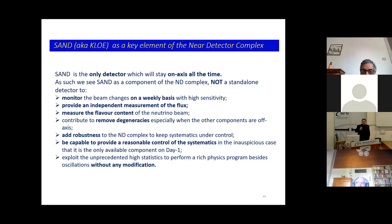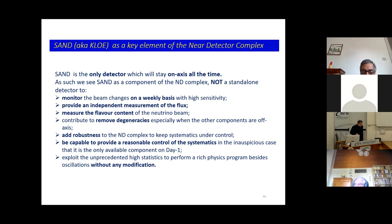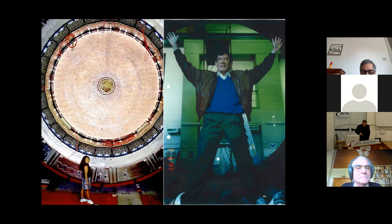We also want to independently measure the flux, the flavor composition of the beam — which is almost pure nu-mu but has small percentages of anti-nu-mu, anti-nu-e, and nu-e — and we want to measure as much as possible all the degeneracies that come from the convolution of cross-section, flux, efficiency, and acceptance. And in case of desperation, the on-axis detector should be good enough for at least a mass ordering measurement in the first year or two.